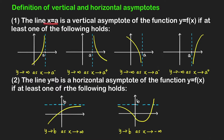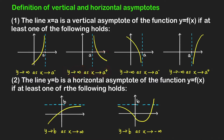The line x equals a is a vertical asymptote of the function y equals f of x if at least one of the following is true: y approaches infinity as x approaches a from the left, so the y values increase without bound. Or as x approaches a from the right, the function values are also increasing without bound, going up indefinitely.